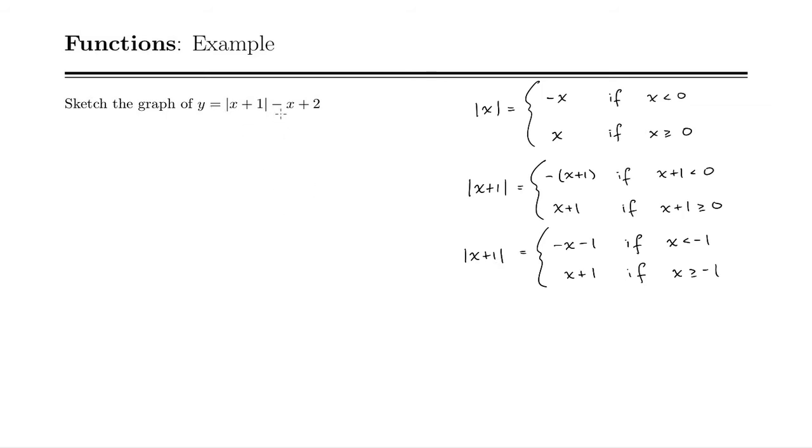Now, y is equal to that thing minus x plus 2. So now what we can do is use our definition and say our y is going to be a piecewise function. It's negative x minus 1 and then minus x plus 2 if x is less than negative 1, and then it's x plus 1 minus x plus 2 if x is greater than or equal to negative 1.